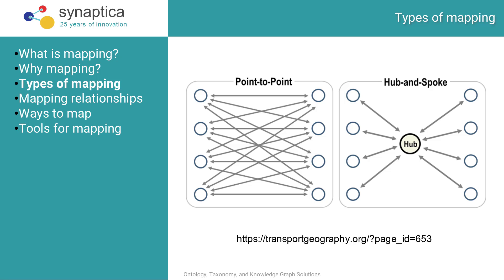This should be familiar from linked data principles. The hub-and-spoke model, on the right, has one vocabulary serving as a central mapping point to all of the others. This can be a better fit in many information ecosystems, provided that the hub is large enough to map to all the other vocabularies.